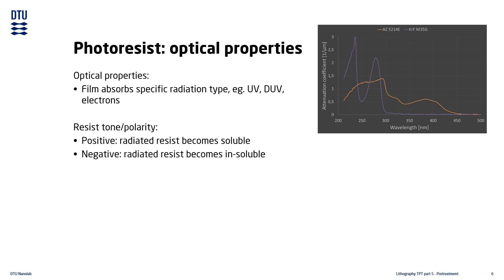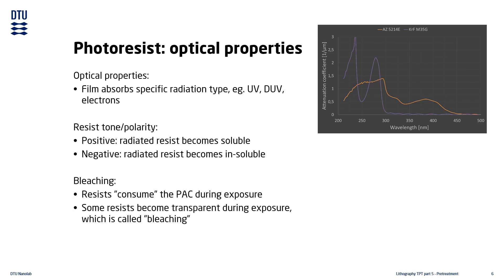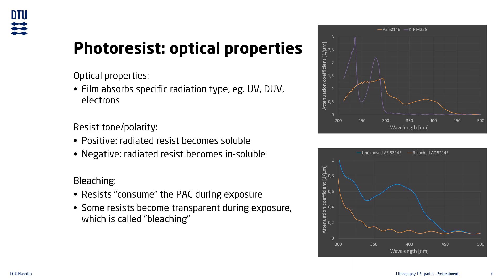Whether your process requires a positive or negative tone resist can depend on the tools available for processing, as well as the process steps following the lithography steps. The photoactive component is consumed when it interacts with the photons in the exposure light. This makes some resists more transparent during the exposure, giving the phenomenon the name bleaching. In these resists, the exposure light is able to penetrate deeper into the resist without being absorbed and diffracted, enabling exposure of thicker films as well as making the side walls of the resist more vertical.